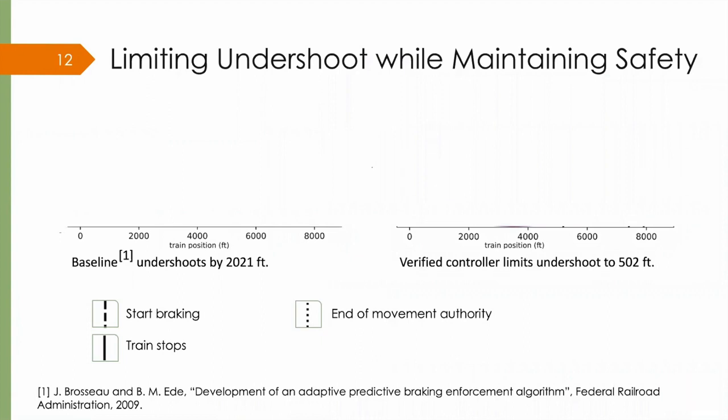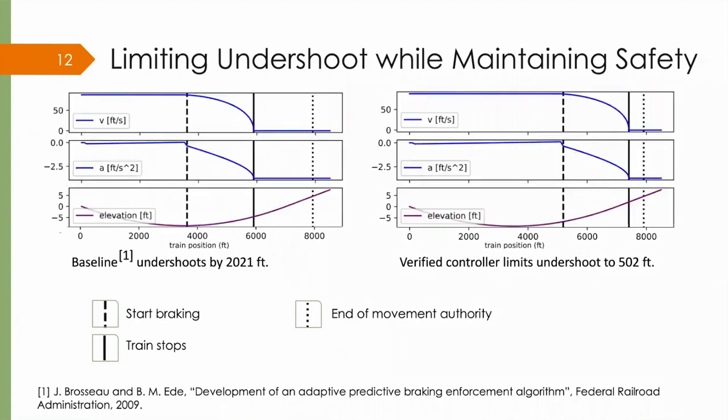The x-axis denotes train position and feet, while the y-axis has three rows. The first denotes velocity, the second shows acceleration, revealing when the train is braking, and the third denotes elevation. This train is going through a trough. On the left, you see that the baseline undershoots the end of movement authority by over 2,000 feet. On the right,